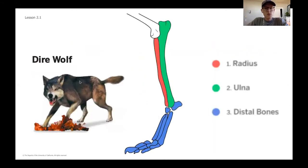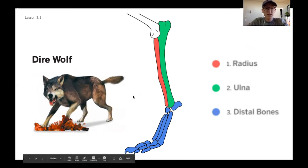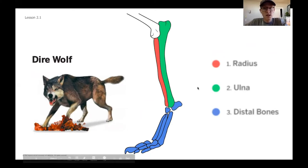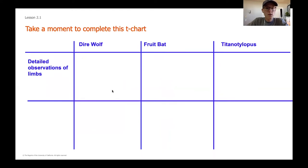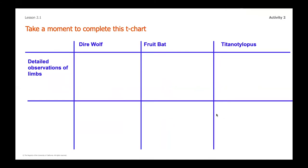I'm going to slowly click through each of the next few slides, which are going to have the specific species with a really large, clear view so it will be easy to see some of those details and be specific in our observations. Each slide will show one of the front limbs for you to compare and jot down detailed observations. This is our wolf — feel free to pause the video right now and fill in that first box. Then you'll make observations on the fruit bat and then the titanolophus. Feel free to pause, take your time, fill in your T-chart, and make as many observations as you think are important.